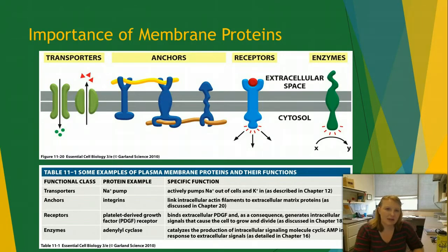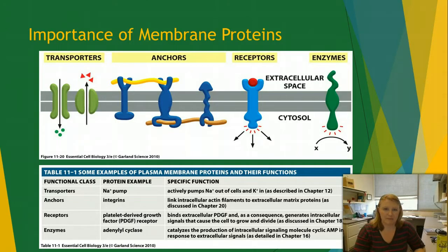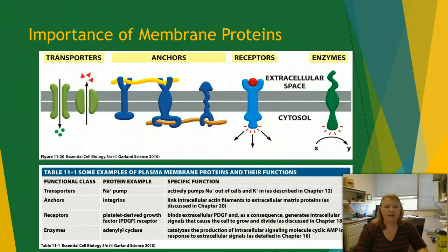We also have anchors, which help tie cells to each other and stabilize internal structures. Receptors are even more important — this is how cells get signals and understand what's going on in their environment and how they start feedback loops. Lastly, we have enzymes, which allow the cell to carry out reactions that need to occur, and they can be stimulated from both outside and inside the cell.